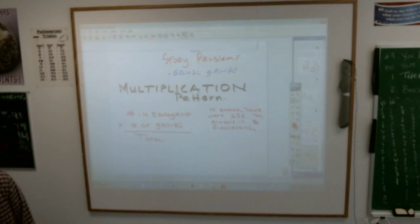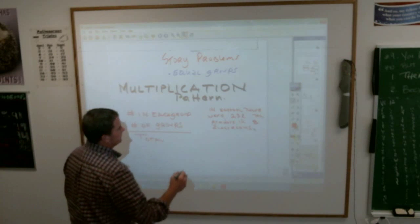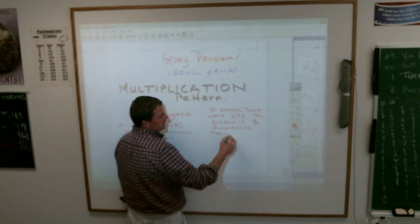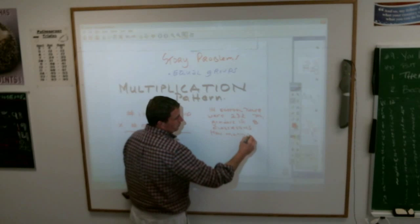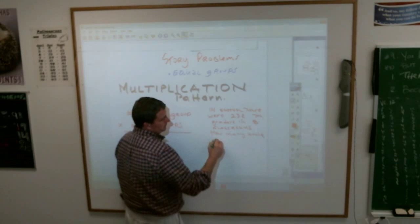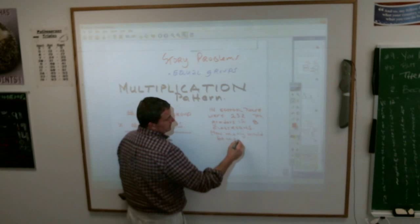How many students should be in each classroom? If you're dividing it up evenly, how many would be in each classroom?